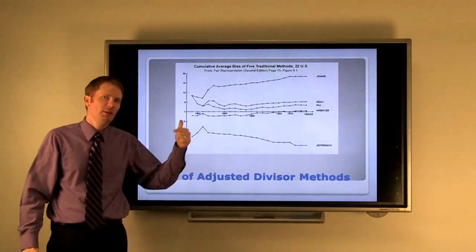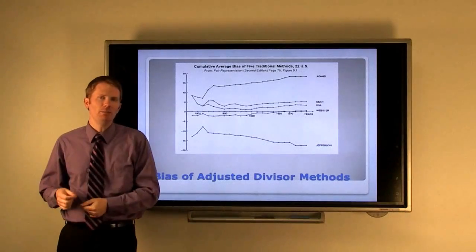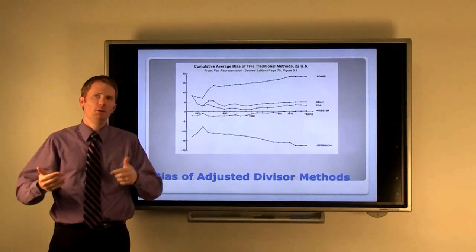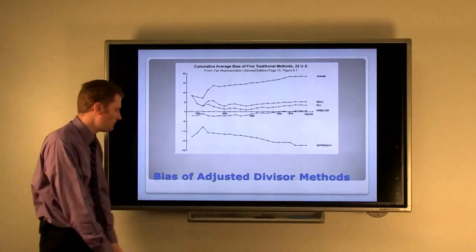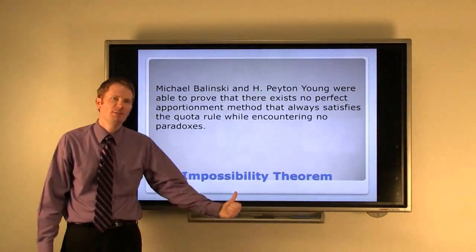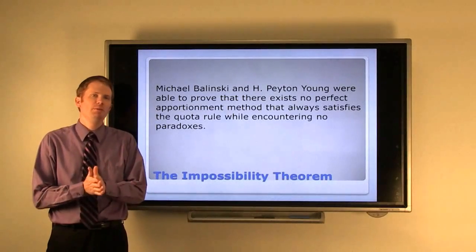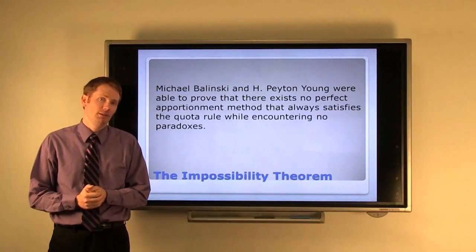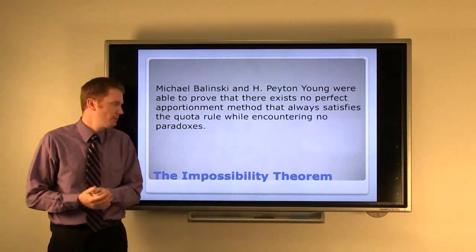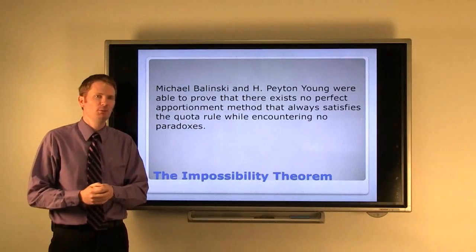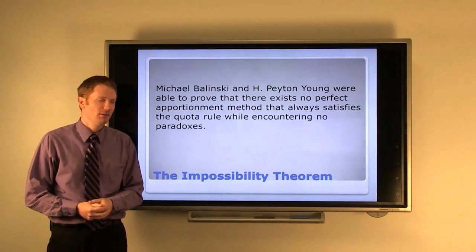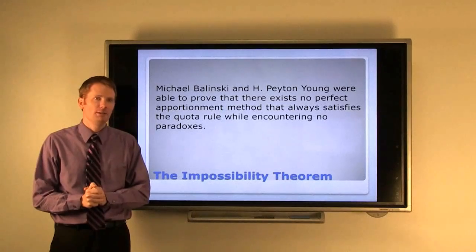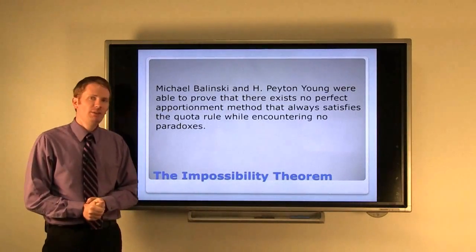But you may still ask, is there a better one out there that we haven't found yet? Is there some method that never encounters paradoxes and yet always satisfies the quota rule, so nobody gets more than their upper quota or less than their lower quota? Balinski and Young were actually able to answer that question. It's called their impossibility theorem. Michael Balinski and H. Peyton Young were able to prove that there exists no perfect apportionment method that always satisfies the quota rule while encountering no paradoxes. You may not actually grasp the importance of this statement. In mathematics, it's very difficult to prove something is impossible. They were actually able to show this at a level much above this video, but we'll take their word for it that it's actually impossible to produce a perfect apportionment method. I'll leave it up to you which method you feel is best.